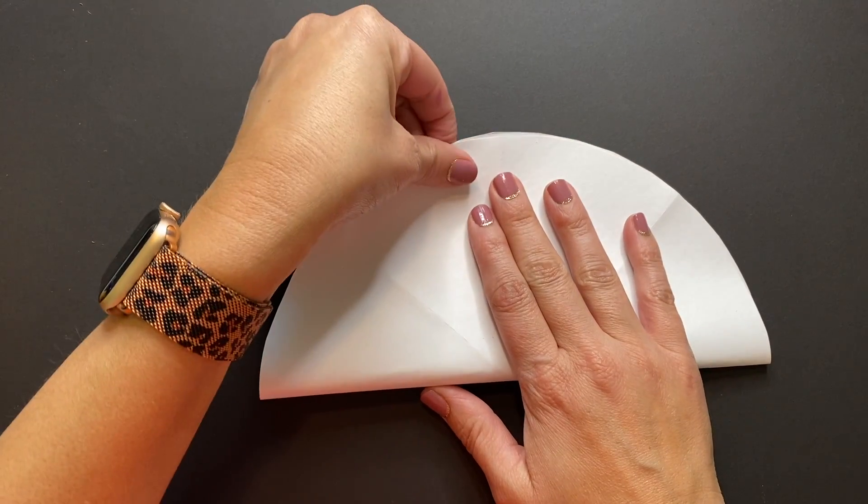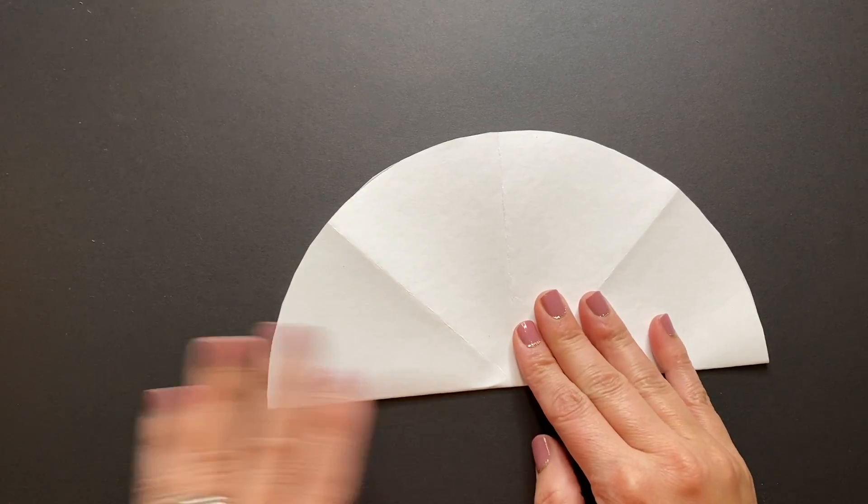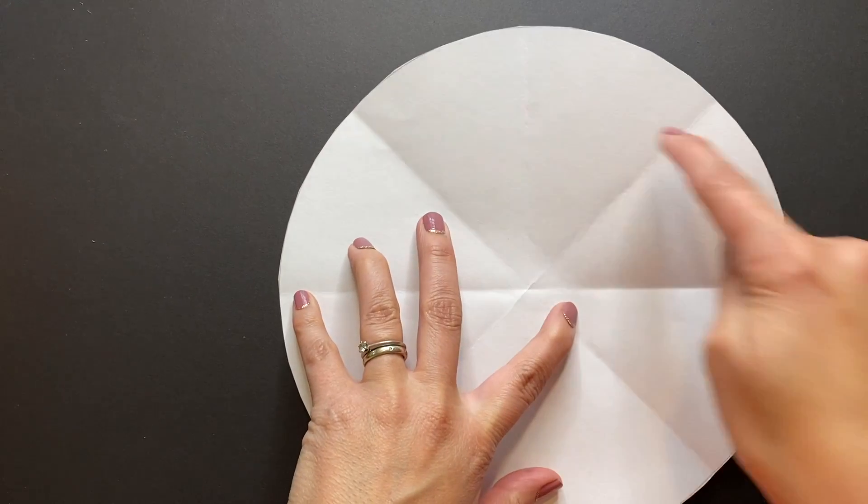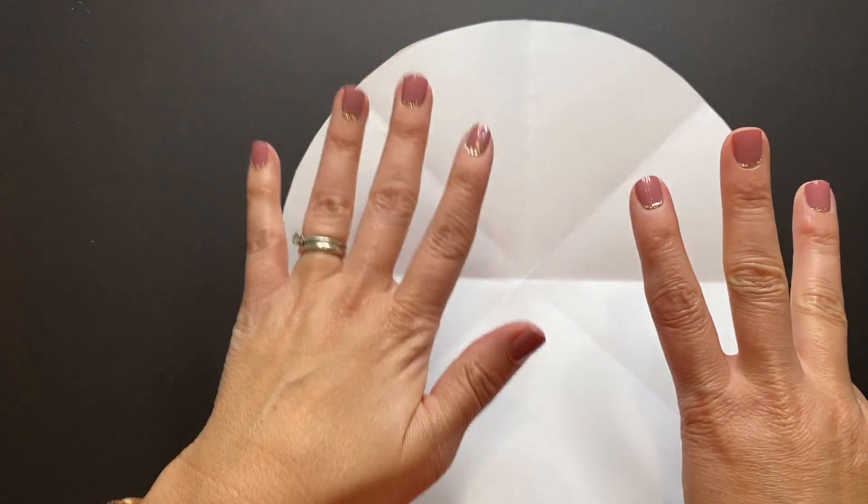So fold it matching up all of those lines, give it a nice squeeze, and voila. Now we have created our eight equal congruent parts of our circle.